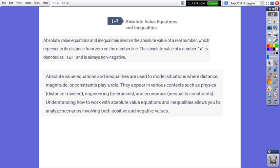And the last lesson in the topic is Lesson 7: Absolute Value Equations and Inequalities, which involve the absolute value of a real number. The absolute value represents a number's distance from zero on the number line. The absolute value of a number x is denoted as |x| and is always a non-negative value. Absolute value equations and inequalities are used to model situations where distance, magnitude, or constraints play a role. They appear in various contexts such as physics (distance traveled), engineering (tolerances), and economics (inequality constraints). Understanding how to work with absolute value equations and inequalities allows you to analyze scenarios involving both positive and negative values.